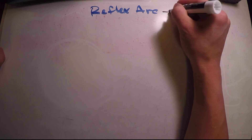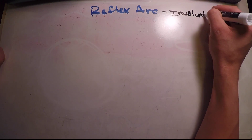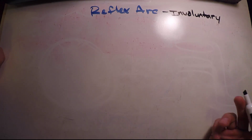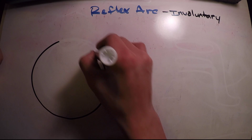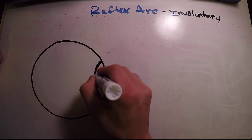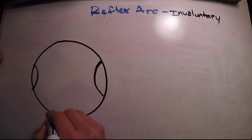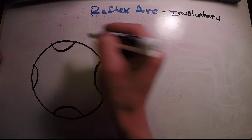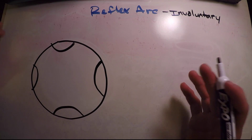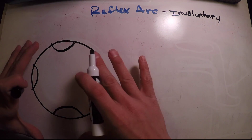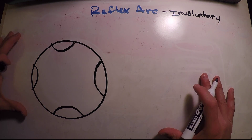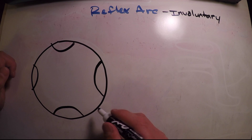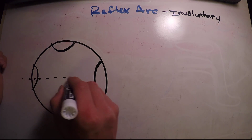One of the main things to know about the reflex arc is that it's always going to be involuntary. The reflex arc occurs in the peripheral nervous system and the spinal cord. Everything outside is going to be our peripheral nervous system, and this here is going to be our spinal cord.